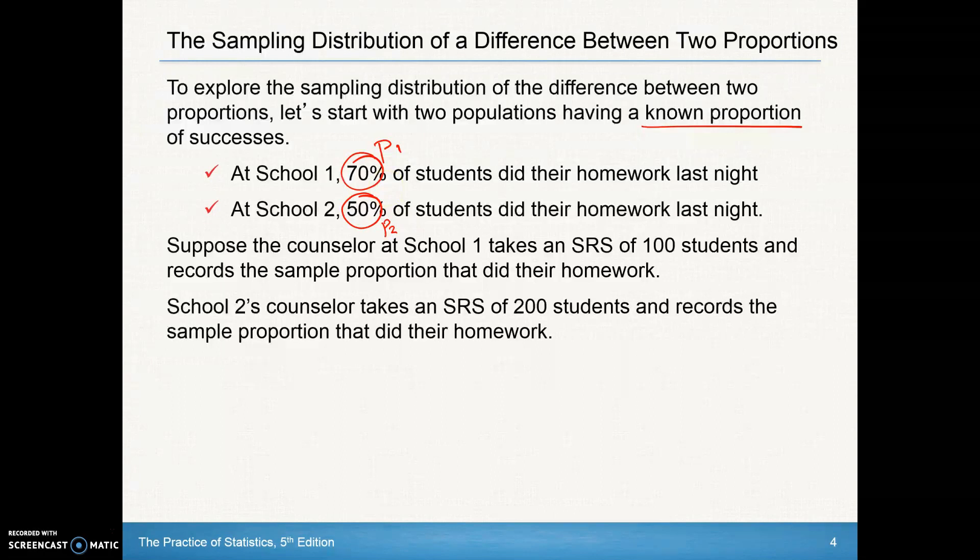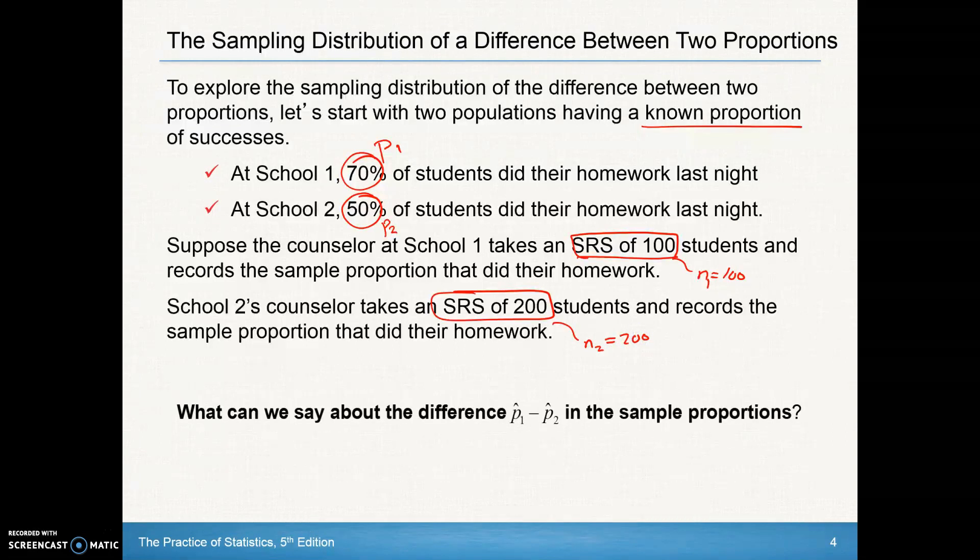Suppose the counselor at School 1 takes an SRS of 100 students, so our sample size from School 1 is 100. School 2's counselor takes an SRS of 200 students, so our sample size from School 2 is 200. What can we say about the difference in proportions in that sample?